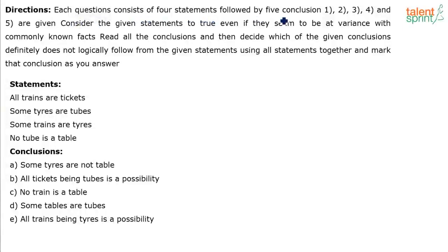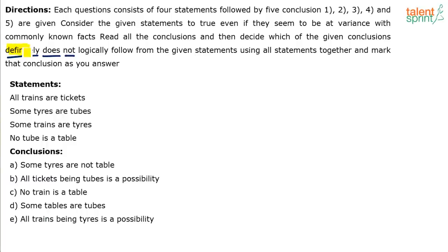Each question consists of four statements followed by five conclusions. Consider the given statements to be true even if they seem to be at variance with commonly known facts. Read all the conclusions and then decide which of the given conclusions definitely does not logically follow from the given statements using all the statements together, and mark that conclusion as your answer. The key phrase is: definitely does not follow.